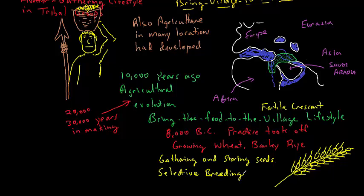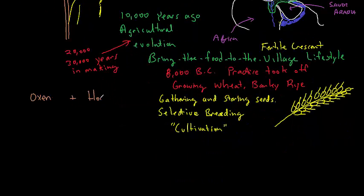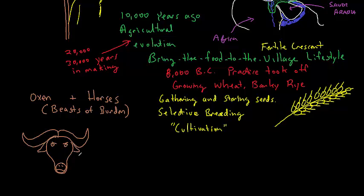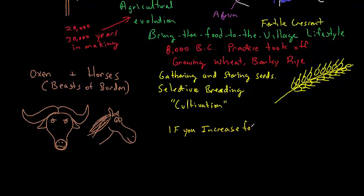They would choose and save seeds, water, and even selectively breed them, though they probably did this unwittingly. They also began to keep and raise and breed large beasts of burden, like oxen and horses, and they started to store food.